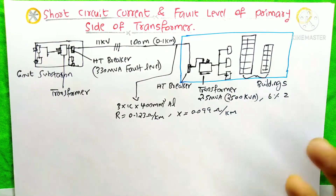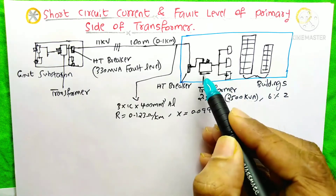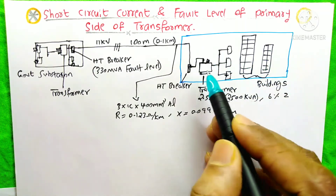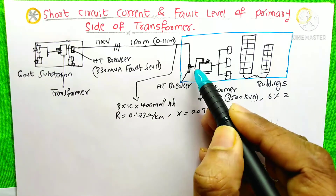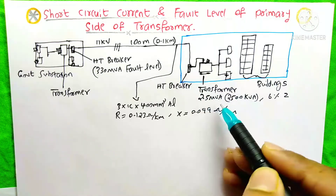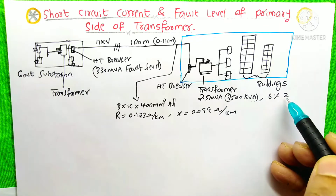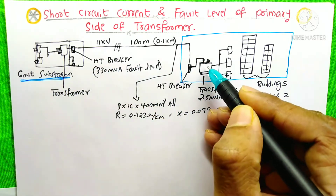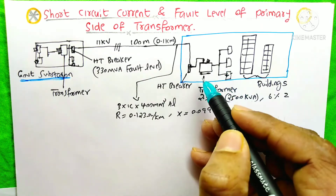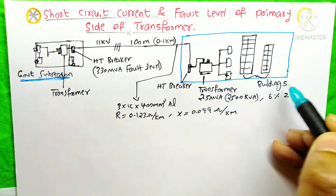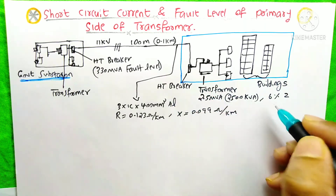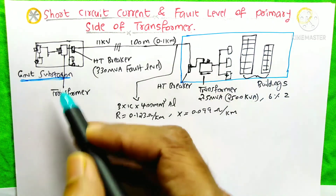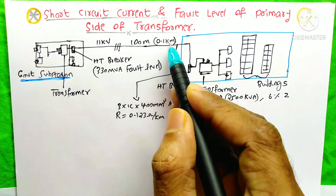Suppose this is our building project — it may be an official building or factory. This is our main transformer, with 2.5 MVA (2500 KVA) rating and 6% impedance. The main transformer is connected directly to the government substation. The primary section is handled only by government engineers; private engineers of this building project have authorization only for the secondary and all other transformers. The government substation is 100 meters (0.1 km) away from our project.